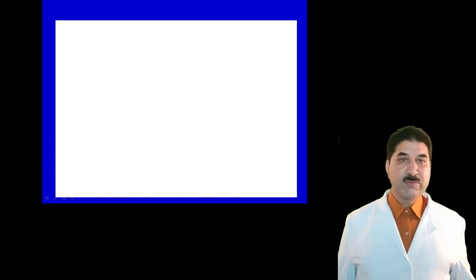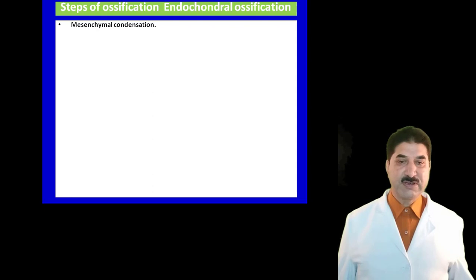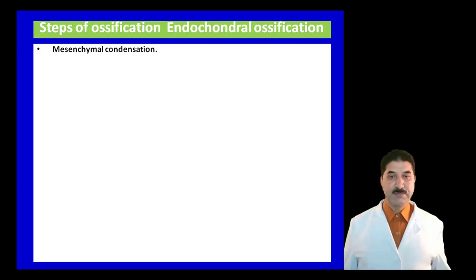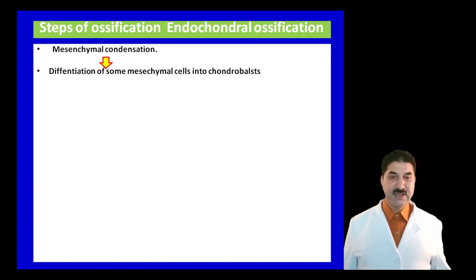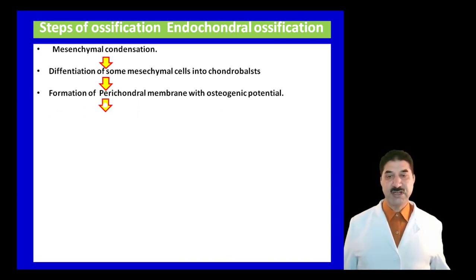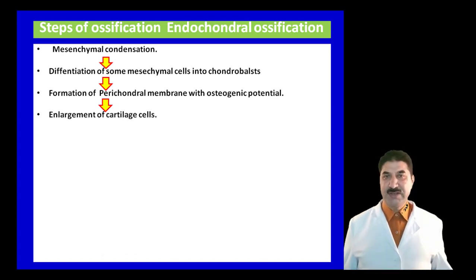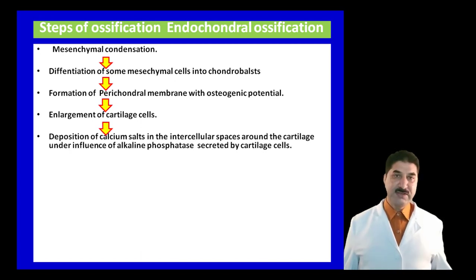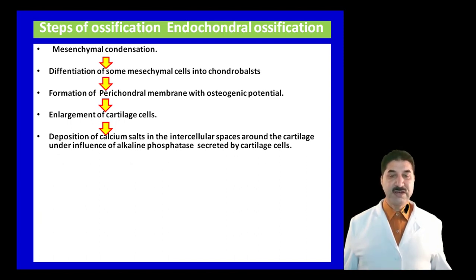The steps involved in endochondral ossification: first, there is mesenchymal condensation, and some mesenchymal cells differentiate into chondroblasts. Then there is formation of the perichondrial membrane with osteogenic potential. The perichondrium has two layers: an outer fibrous layer and an inner osteogenic layer from which the osteogenic bud arises. This is followed by enlargement of cartilaginous cells in some areas, then deposition of calcium salts in the intercellular spaces under the influence of alkaline phosphatase secreted by cartilage cells.